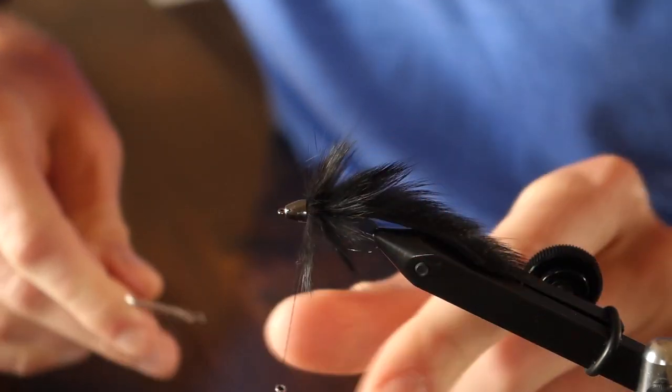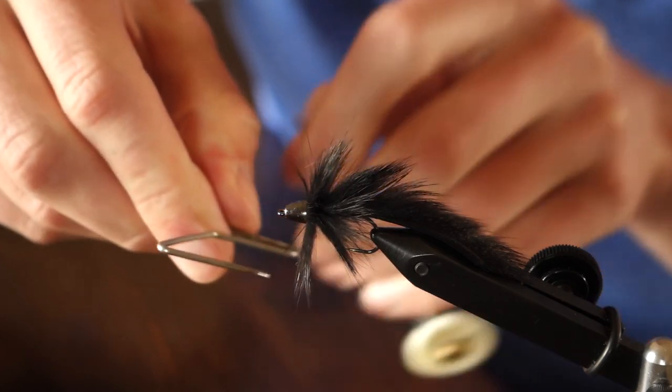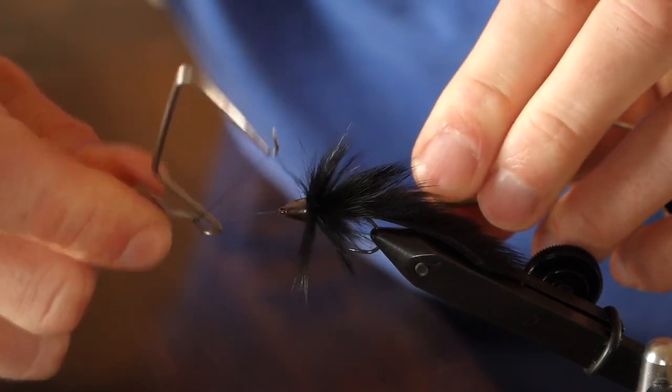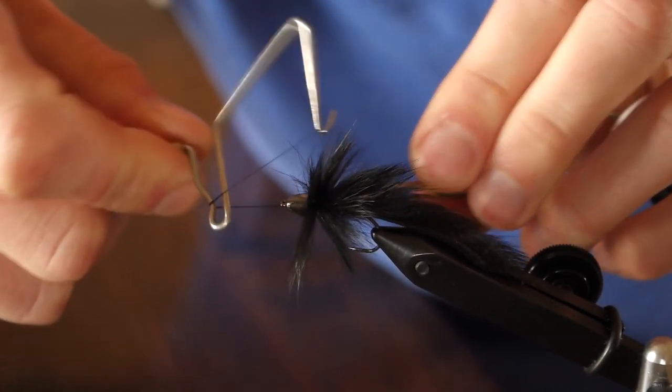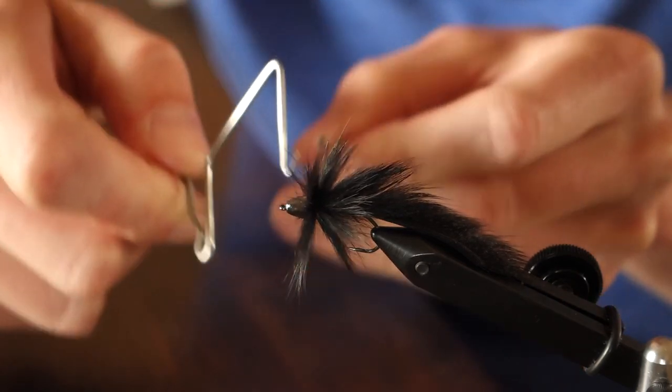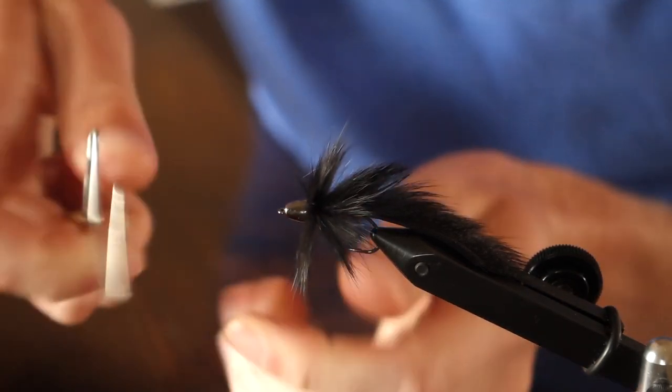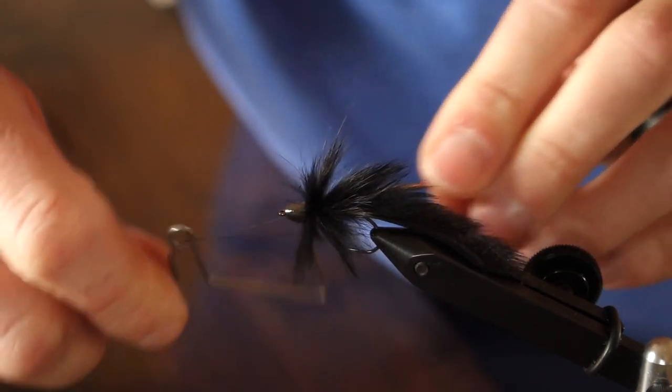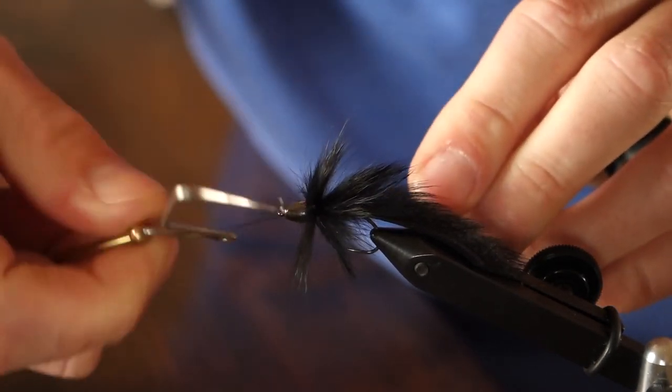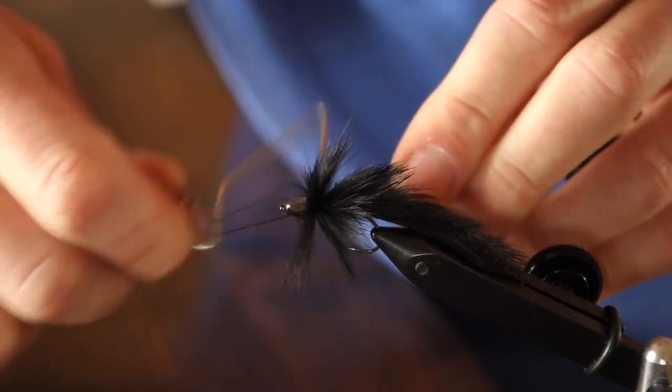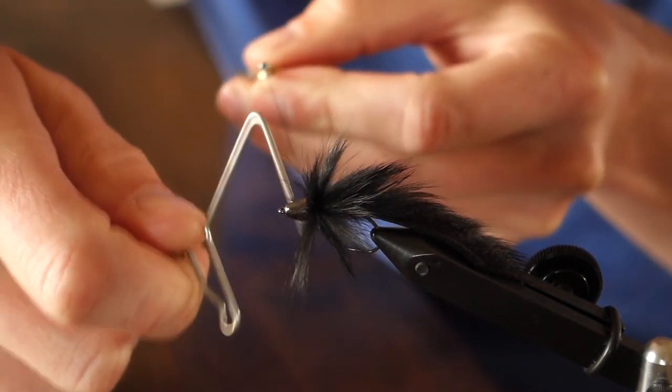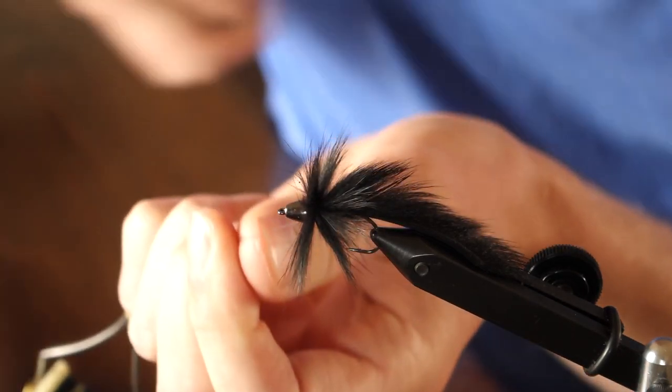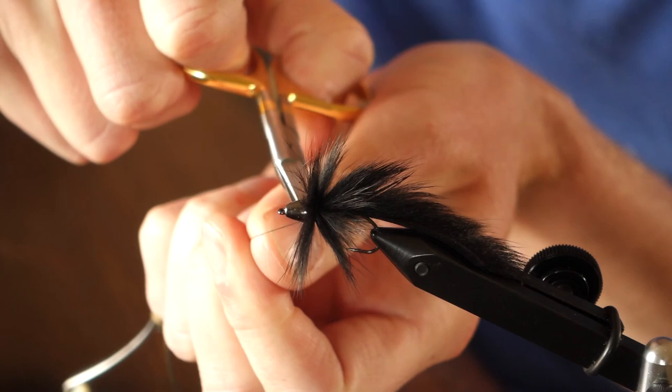From here I can go ahead and whip finish behind the cone head. I'll make a couple whip finishes, two, three, or four turn whip finishes will hold that in really well. We can cut our thread off here.